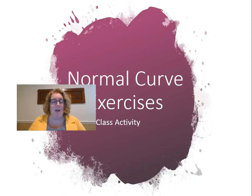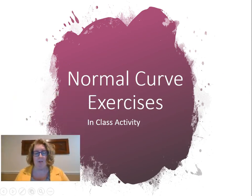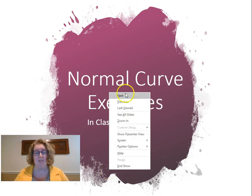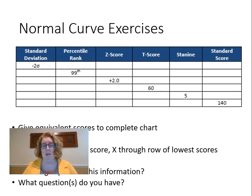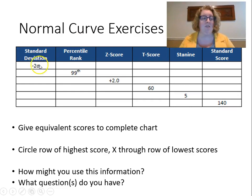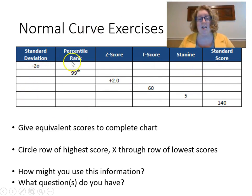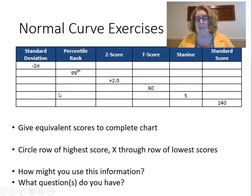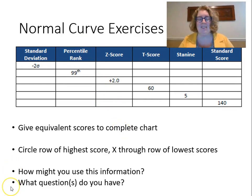For this in-class activity, pause the video and take some time. Given a standard deviation unit, you should be able to tell me the percentile rank, the z-score, the t-score, the stanine, and the standard score. Fill out the chart, tell me which row has the highest score, which has the lowest, and how you could use this information. If you have difficulty, email me and we can set up a meeting — I'm happy to go over this in my office or by phone. Have a great day, and I look forward to seeing your work this week!